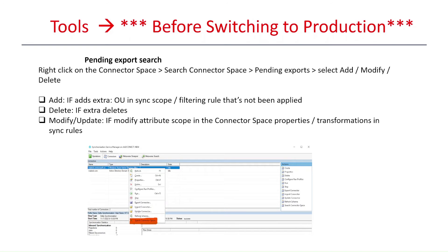The most important thing to consider before switching to production is the pending export search. To find pending exports, go to Sync Service Manager, right-click on the connector space, select Search Connector Space, then Pending Exports. You can see three operations: Add, Modify, and Delete.